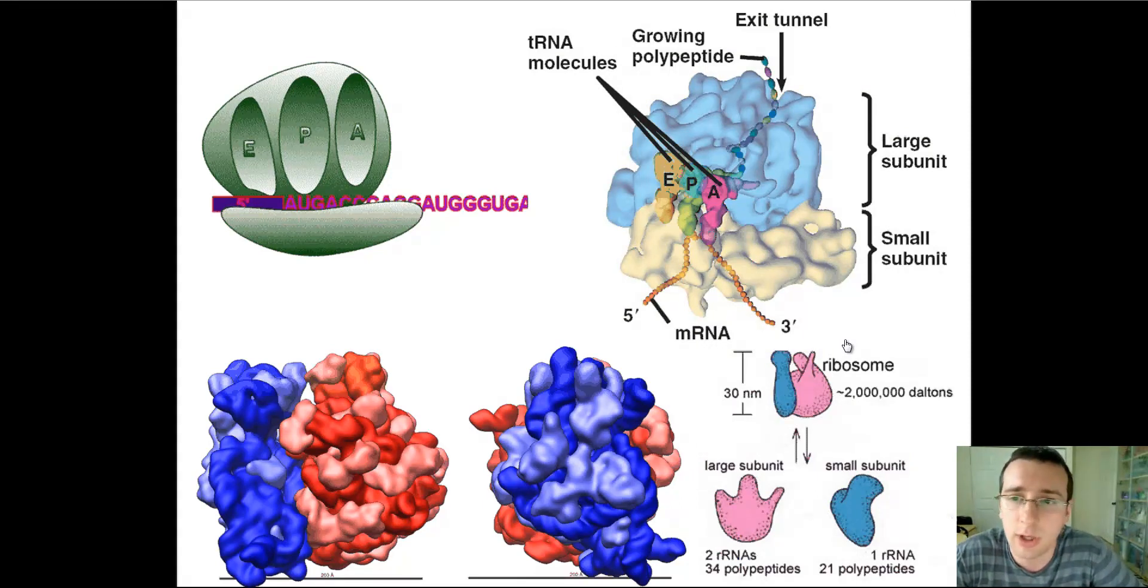The small subunit will connect to the messenger RNA first, and then the large subunit will connect on top of that once the initiation complex has been built. Each ribosome will also have an E, a P, and an A site.